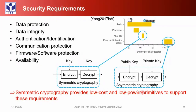Security requirements include data protection, data integrity, authentication and identification, communication protection, and firmware and software protection. In the past, cryptography algorithms can be separated into two categories: symmetric cryptography and asymmetric cryptography. For symmetric cryptography, we use the same key for encryption and decryption. For asymmetric cryptography, we use a public key and a private key. The advantage of symmetric cryptography is that we can process rapidly and reduce power consumption, while the advantage of asymmetric cryptography is that we can increase the security level. In our projects we focus on symmetric cryptography.